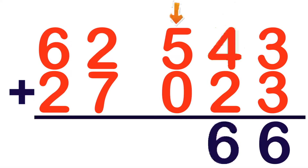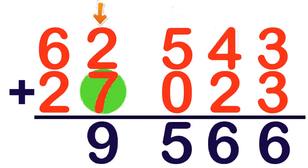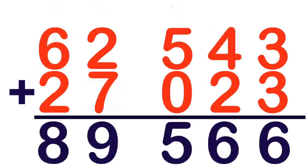Let's proceed to the 100's place. 5 plus 0 — any number that you add by 0, the sum is the number itself. So, 5 plus 0 is equal to 5. Let's proceed to the 1,000's place. 2 plus 7 — 7 on your mind: 7, 8, 9. 2 plus 7 is equal to 9. How about 6 plus 2? 6 on your mind: 6, 7, 8. So, the sum of 62,543 and 27,023 is 89,566.